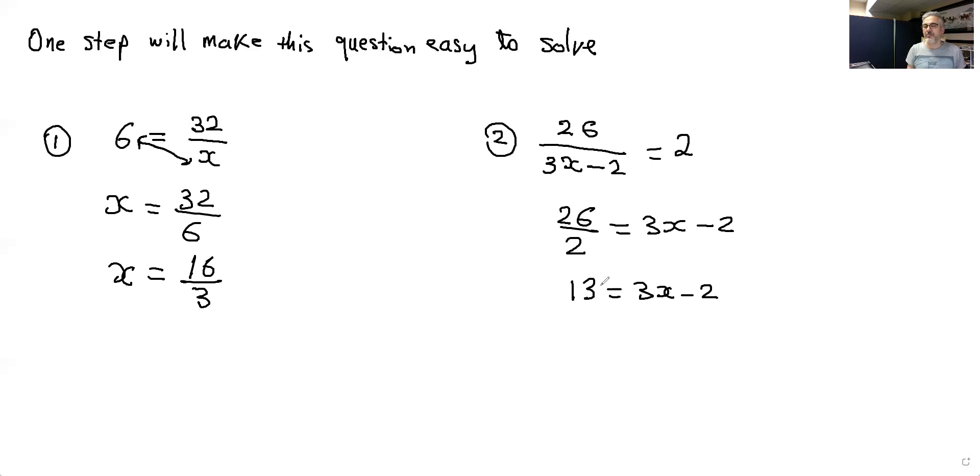Now move the negative 2 to the other side. So we add 2 to both sides and that will give me 13. 13 plus 2 equals 3x and that's 15 equals 3x. Divide both sides by 3, x equals 5.